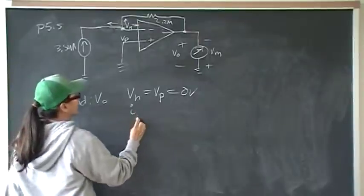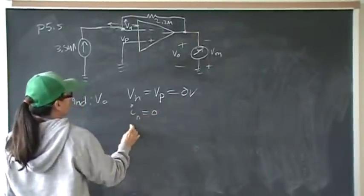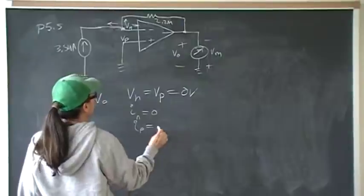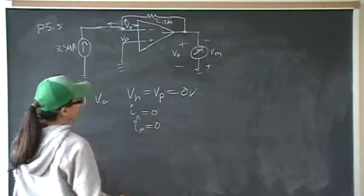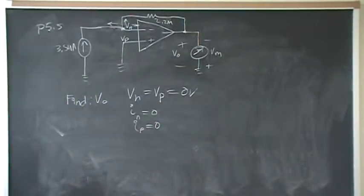There's no current going into the negative terminal, and there's no current going into the positive terminal either. So solving for Vm reduces to doing KCL, or the node voltage method, at the negative terminal.